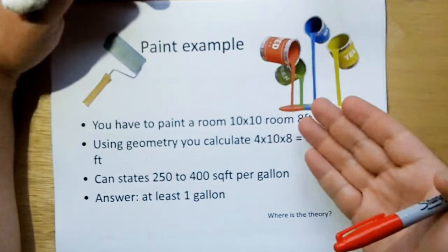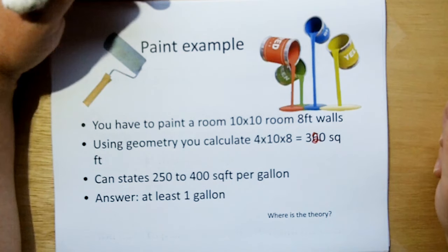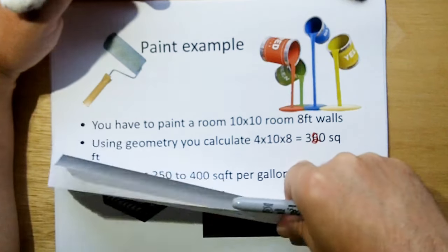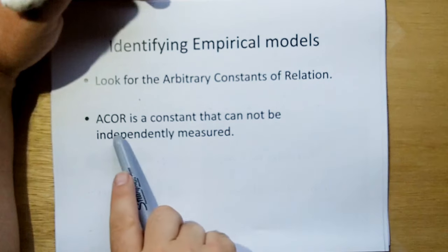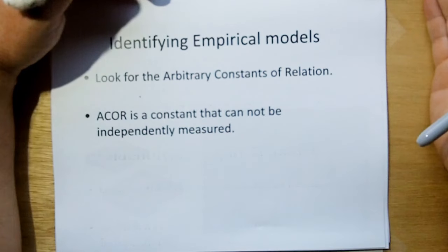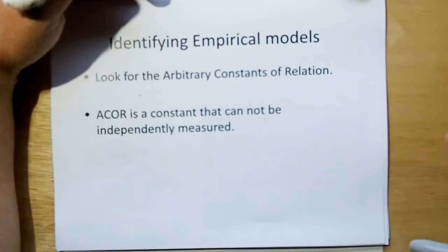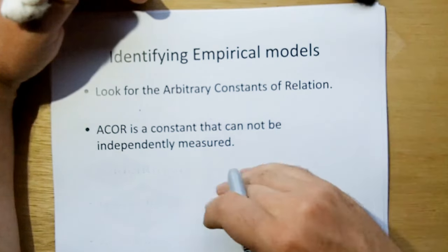So here we have it. Without some empirical measurement, the equations for calculating the paint coverage that you need are completely useless. Math is completely useless without an empirical measurement somewhere. It doesn't matter what you're doing. We're going to show even the theory of relativity has an empirical measurement in it. So let's identify all these empirical models. Let's look for the arbitrary constants of relation. An arbitrary constant relation can be defined as a constant that cannot be independently measured.